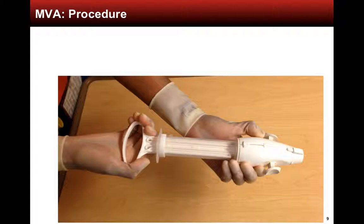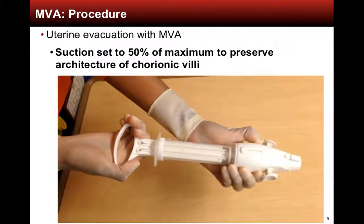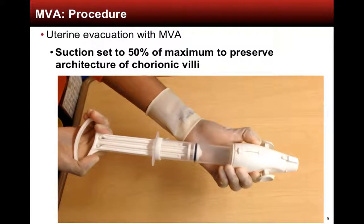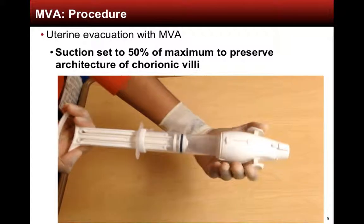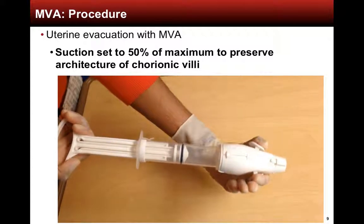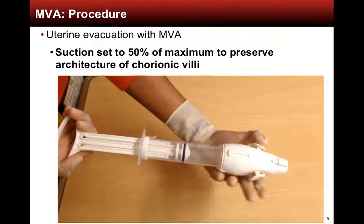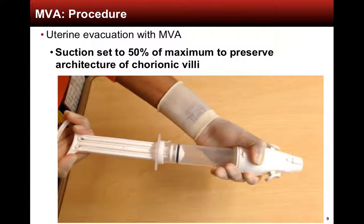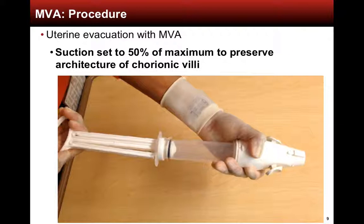To prepare the syringe, set the plunger, as shown in this video, to 30 cc's or halfway, before depressing the tabs at the top of the aspirator and then engaging the suction.